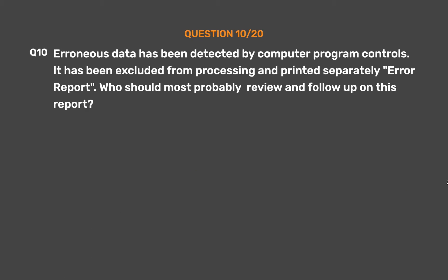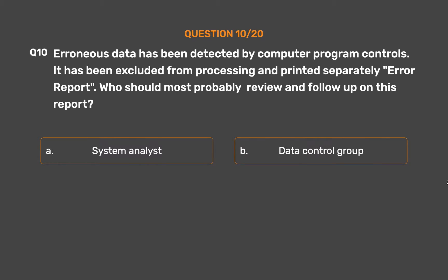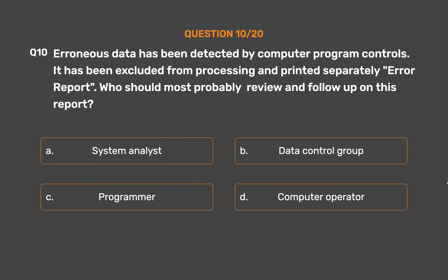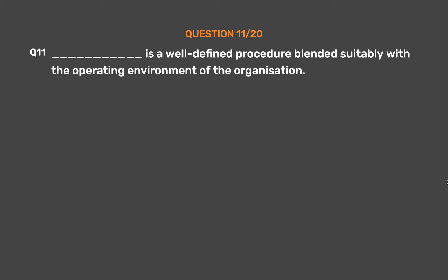Question number 10. Erroneous data has been detected by computer program controls. It has been excluded from processing and printed separately as an error report. Who should most probably review and follow up on this report? Option A: System analyst. Option B: Data control group. Option C: Programmer. Option D: Computer operator. The correct answer is Option A — System analyst.